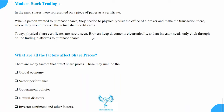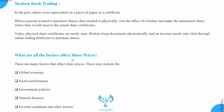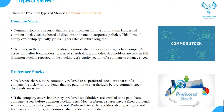Brokers now keep documents electronically, which is called dematerialized. There are many factors affecting the share price: global economy, sector performance, government policies, natural disasters, investor sentiments, and other factors. These are all major factors, interrelated, and they all affect the growth and downtrend of shares.